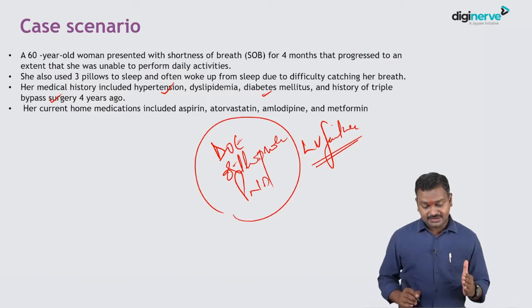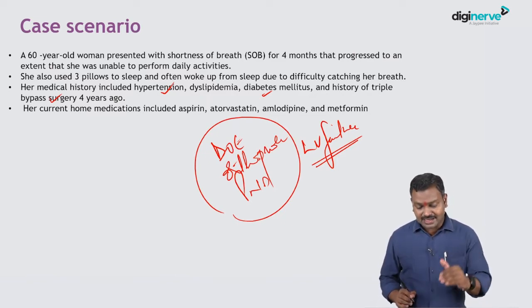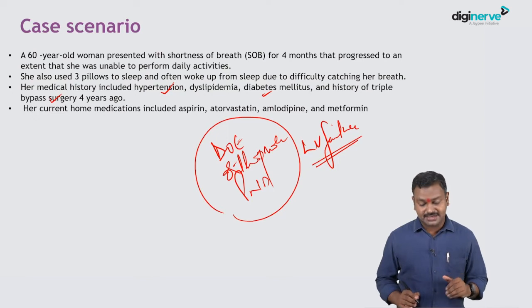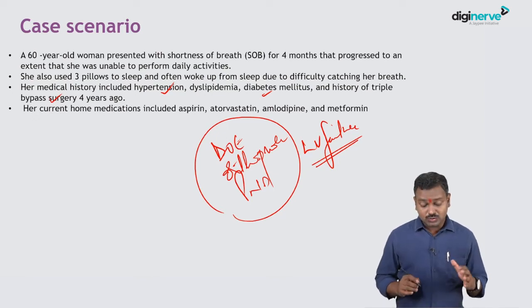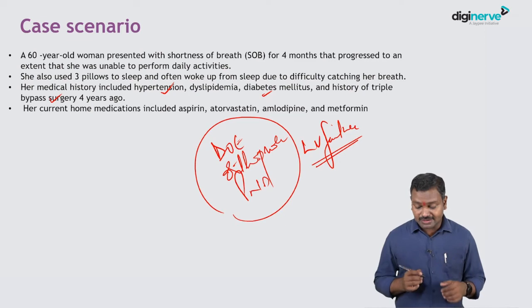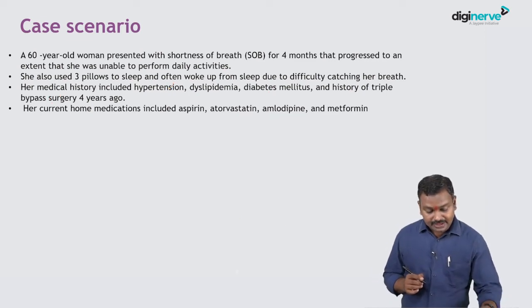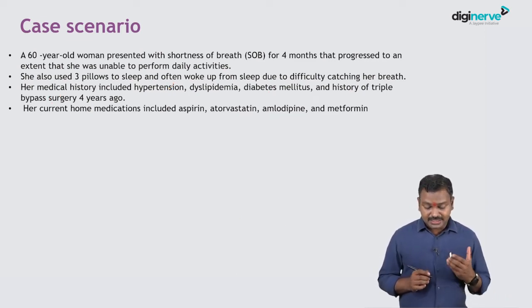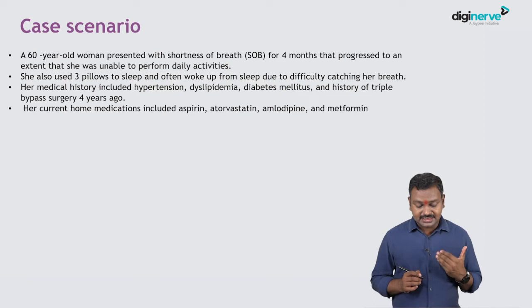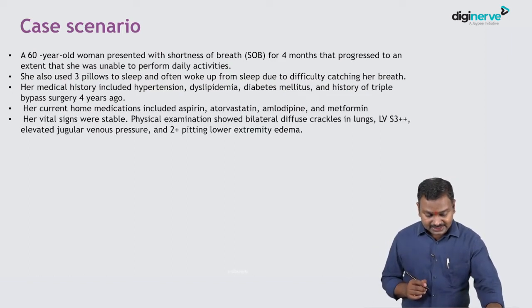Now, she has had heart disease for four years — why has it acutely precipitated over the past four months? Why has it worsened now? That is what we'll have to evaluate. Her current medications include aspirin, atorvastatin, amlodipine, and metformin, so she has been on medications for all of that.